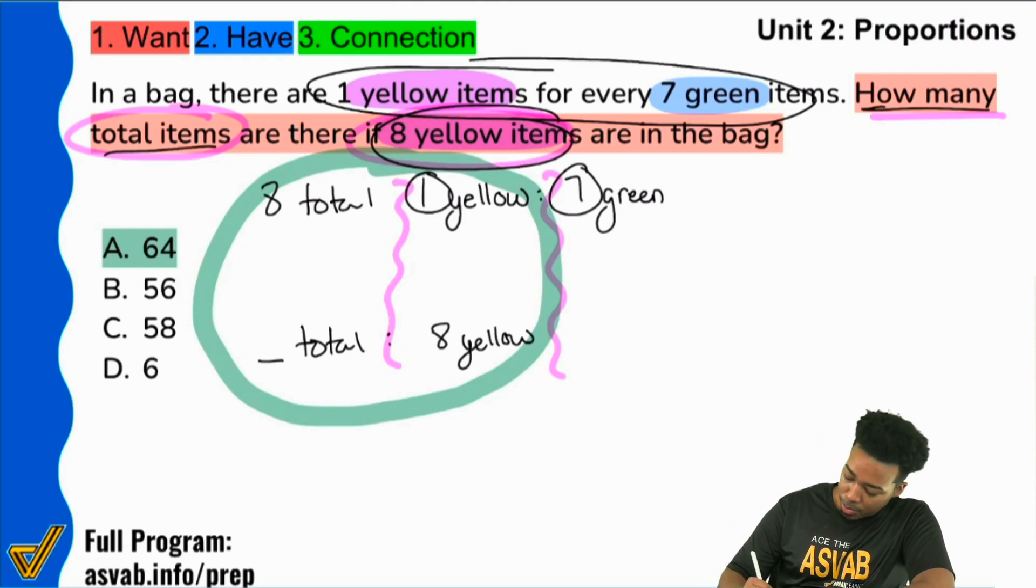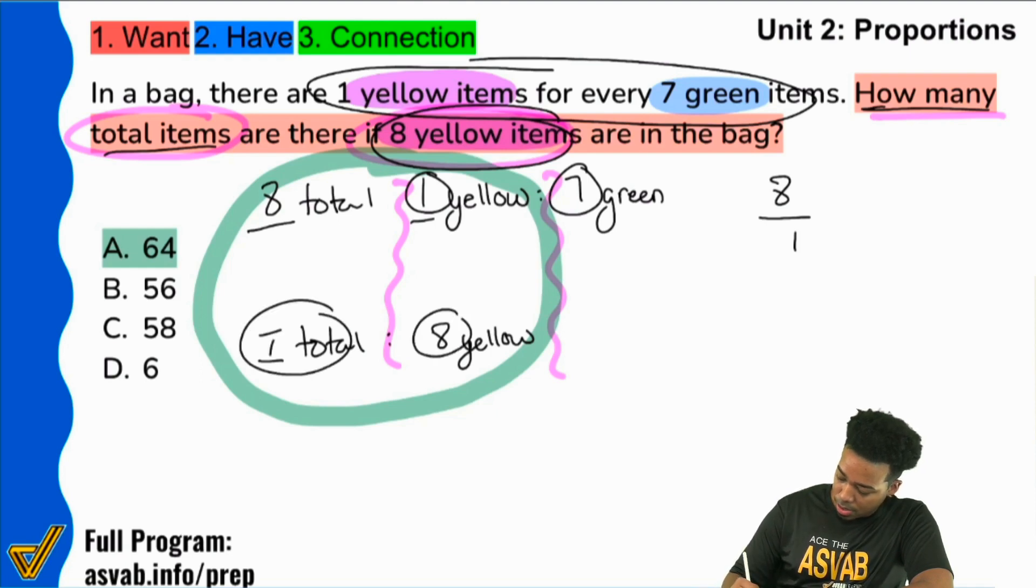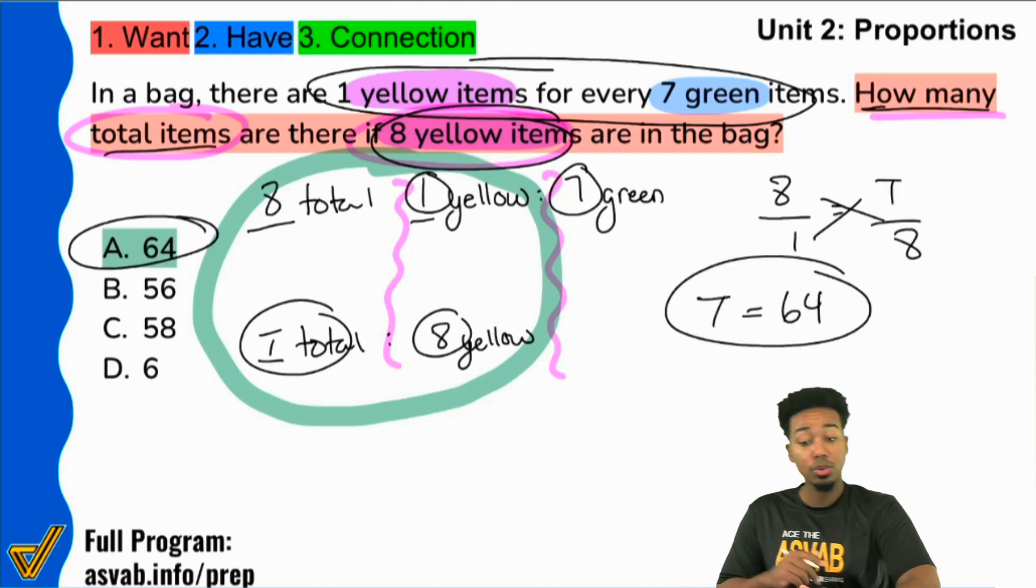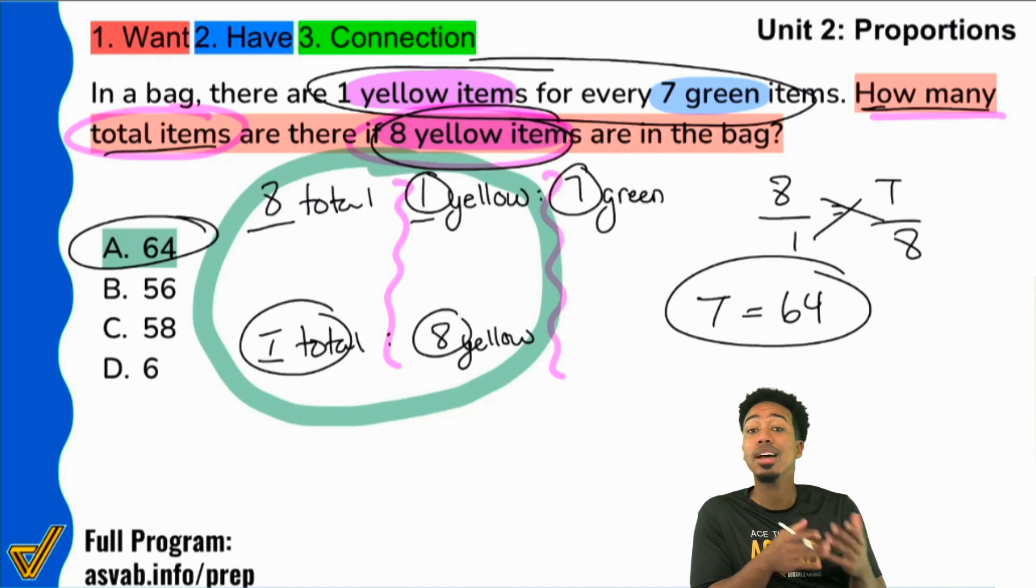Once you have it, you're done. We have eight over one equals total, so T over eight. With that said, cross multiply and we get T equals 64 done. And so it really is my party people, it really is that straightforward.